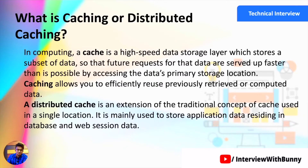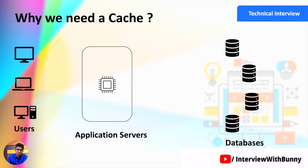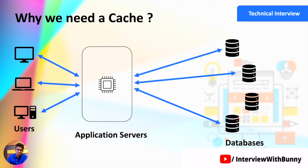Now let's understand why we need distributed caching. Generally, a backend application stores data in a database, and when a client requests data, the application server queries and fetches the data from the database and returns it to the user. However, reading data from the database is time-consuming since it requires a network call as well as an I/O operation to fetch data from the file system. If thousands of users are requesting the same data repeatedly, the application server has to fetch the same data again and again, significantly decreasing overall system performance. That is why we need a caching mechanism to hold the most frequently requested data.